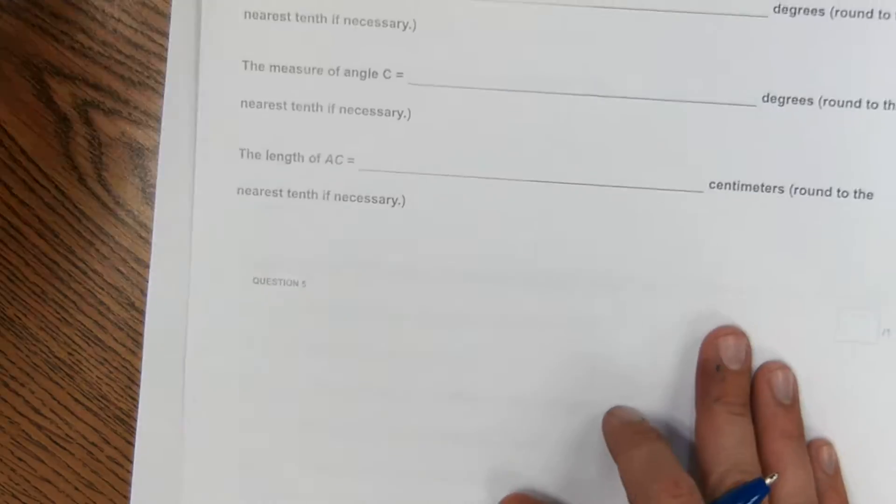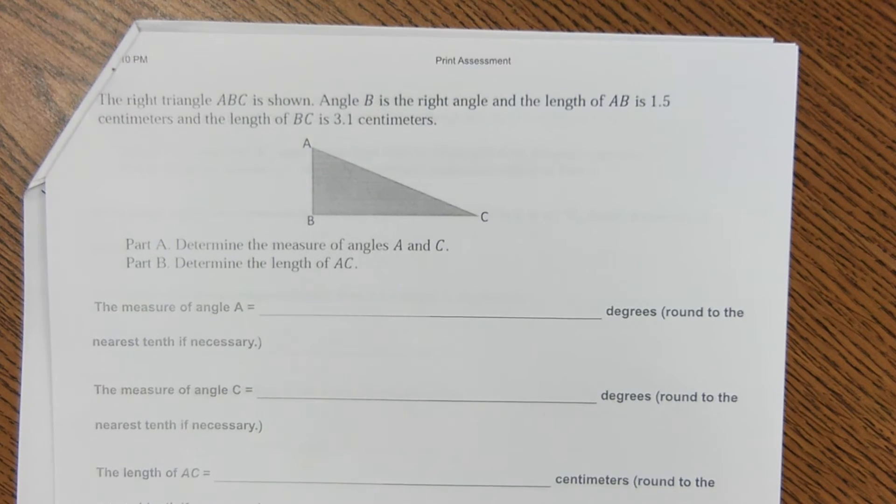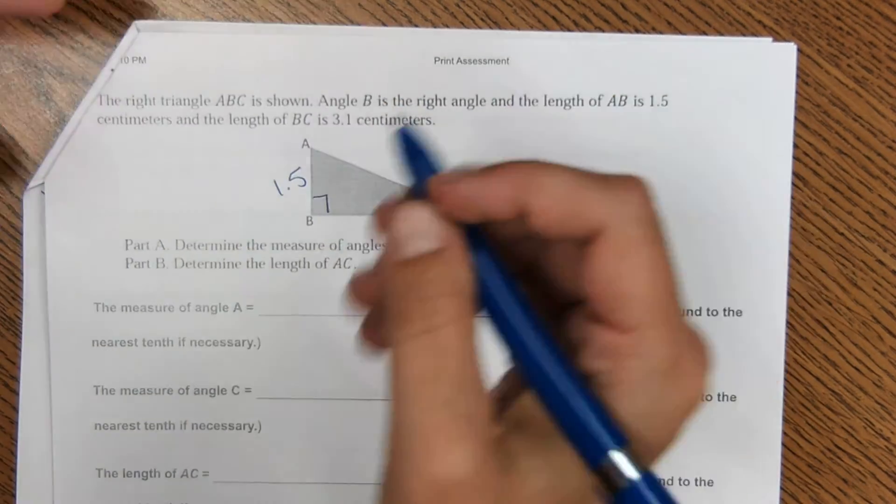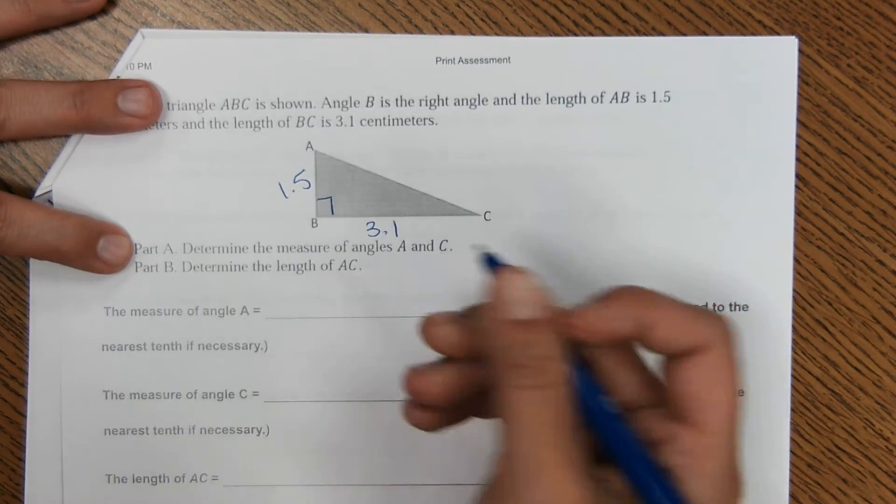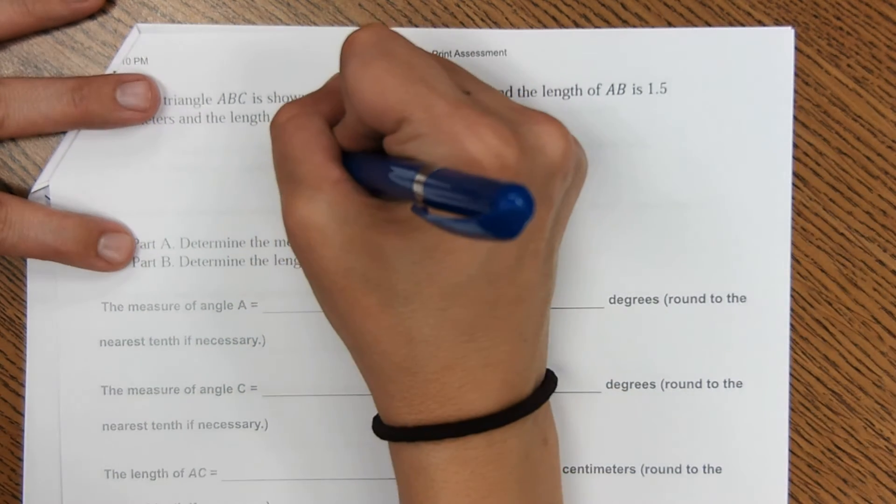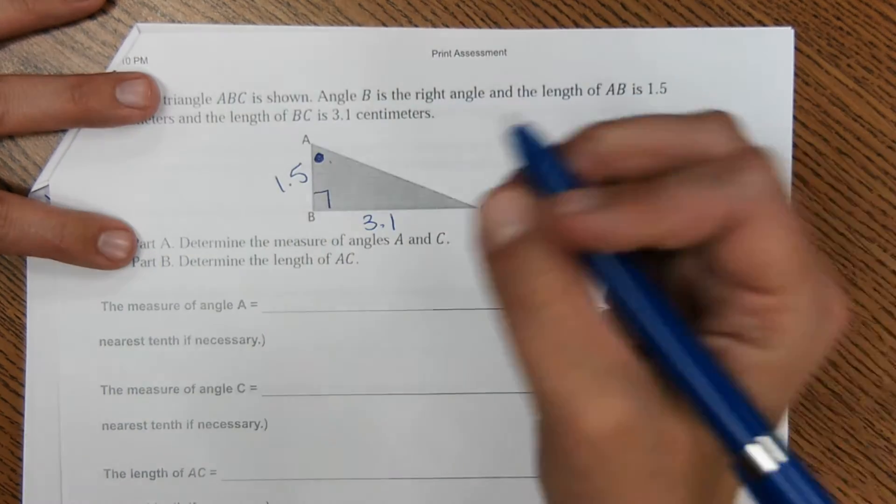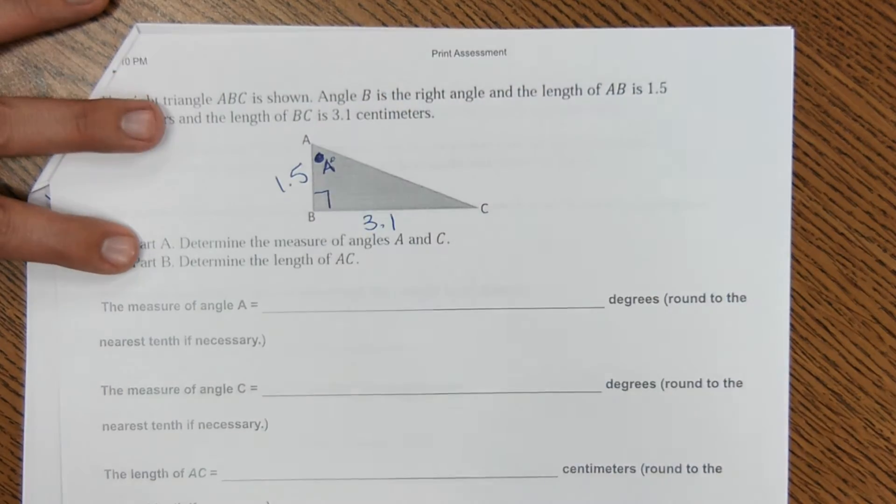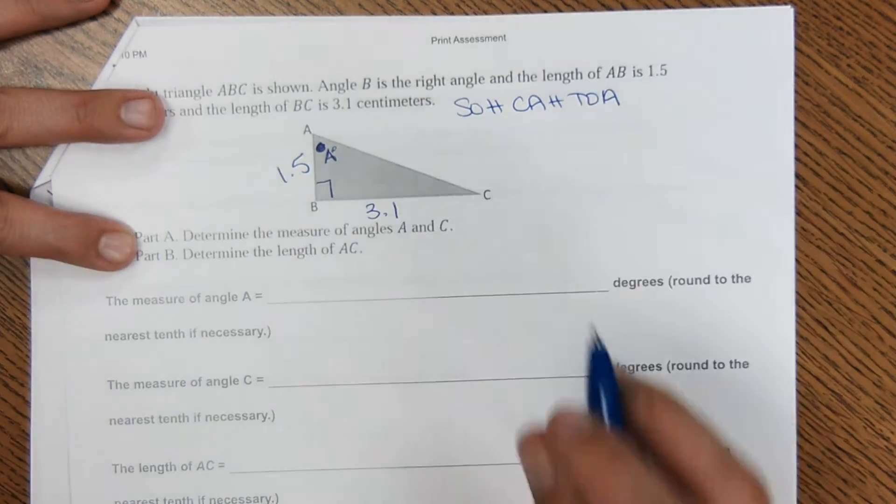Okay, and then next question. This one right here, triangle ABC is shown. Angle B is a right angle. The length of AB is 1.5, and the length of BC is 3.1. Determine the measure of angles A and C. Okay, so we'll start with one at a time. We'll start with angle A, just make it a dot or theta or x. You know what, let's just call it a degrees. Okay, we're going to start by using trigonometry, SOHCAHTOA, to find this angle.